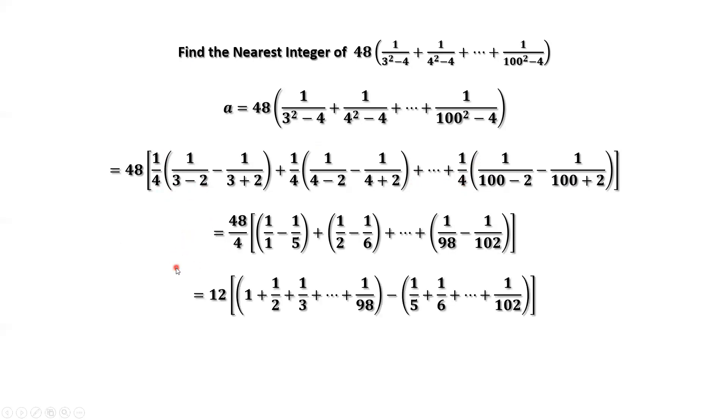Each term of the inside part, we group all positive terms and group all negative terms. The positive terms end at 1 over 98. The negative term starts from 1 over 5 and ends at 1 over 102.